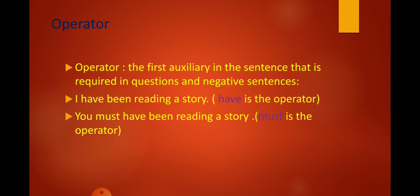The same applies for the next example: 'You must have been reading a story.' In this example, 'must' is the operator because it is the first auxiliary in this sentence. So we can say 'You must not have been reading a story' or 'Must you have been reading a story?' But I cannot consider 'have' in this example as the operator, because it is the second auxiliary in the sentence. So 'You must have not been reading a story' is wrong, and 'Have you must been reading a story?' is also wrong, because 'have' is not the operator in this sentence.